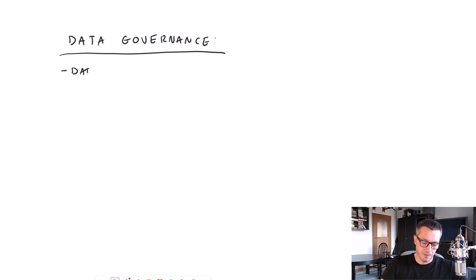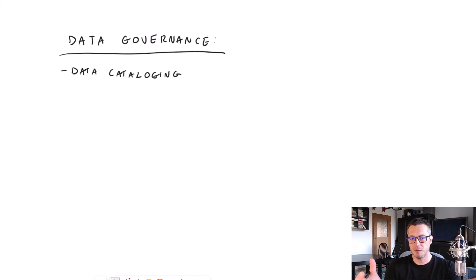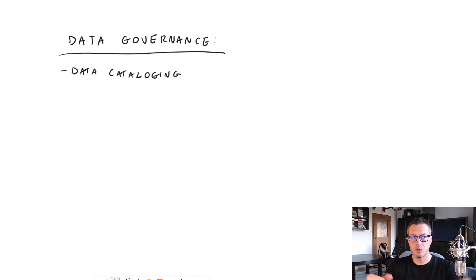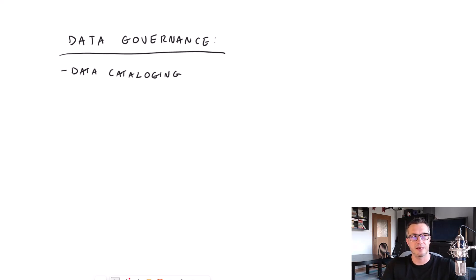The first key element is data cataloging. As your company grows, you will have more and more data assets produced by various systems. To avoid a total mess, you would like to have some kind of index that stores information about all those data assets — what they are, where they are, and what the data is all about. Data cataloging is about creating this index that can be used to search for data assets. That's the first key element of data governance.